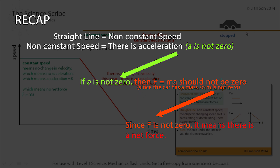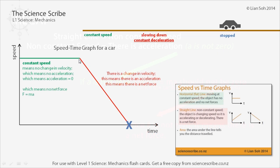If I wanted to work out the total distance that this car has traveled, I look for the area under the whole line — under the straight line and under the red line. The area under the graph in a speed-time plot will tell you the total distance that something has traveled.